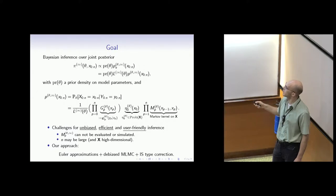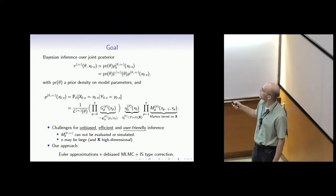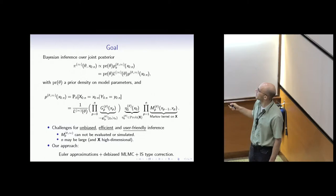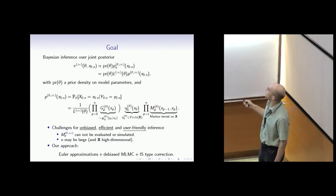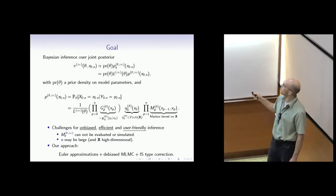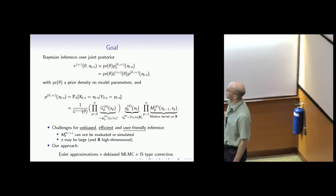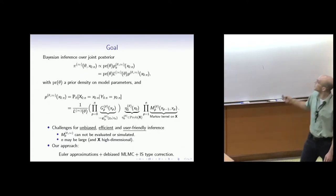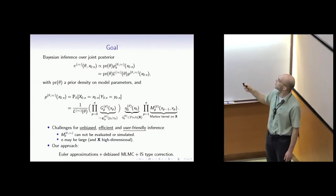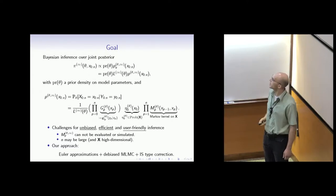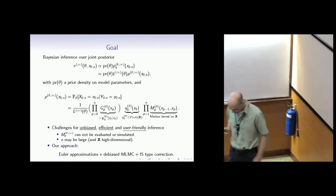We're interested in joint inference over the Bayesian joint posterior. We fix a prior on the model parameters and have a latent probability, which I'm writing in densities for the sake of presentation, though we should keep in mind that these densities are not obtainable. We're interested in the problem of joint inference over theta and X.